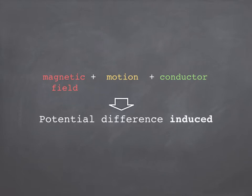You should already know that when we have a magnetic field and movement and a conductor, then a potential difference is induced in the conductor.